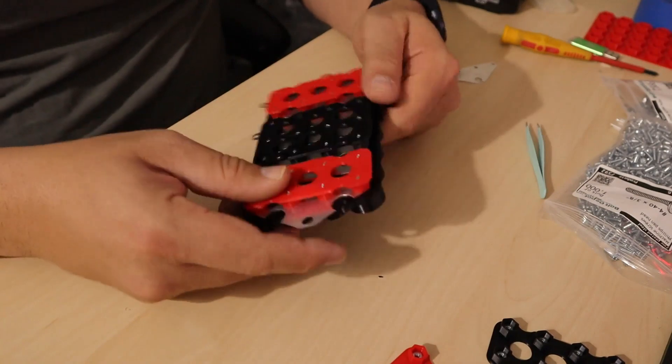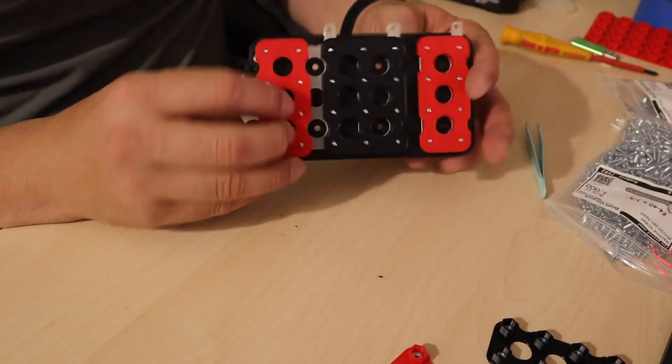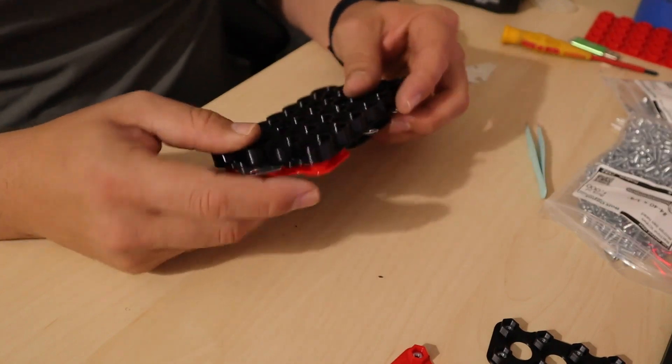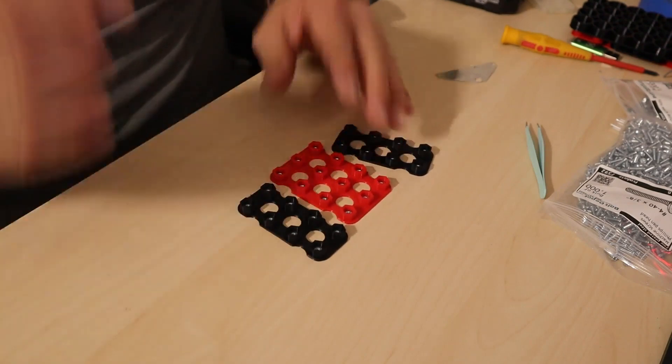Once you're done with this side, make sure everything is okay, that nothing is weak or loose. Make sure every single screw is tight, put it aside, and get ready to assemble the next spacer.